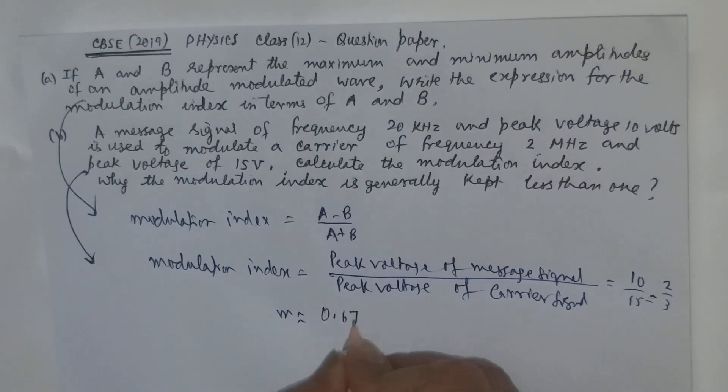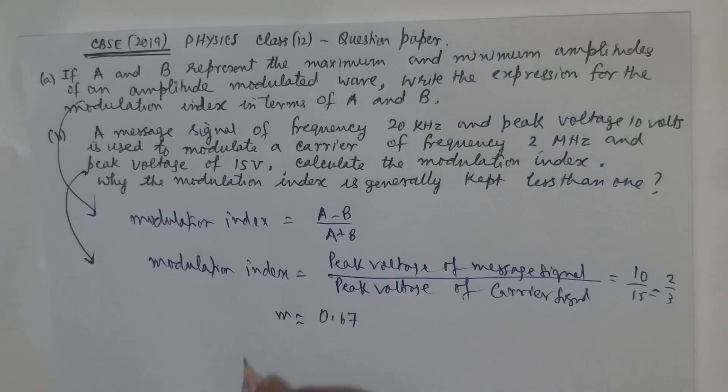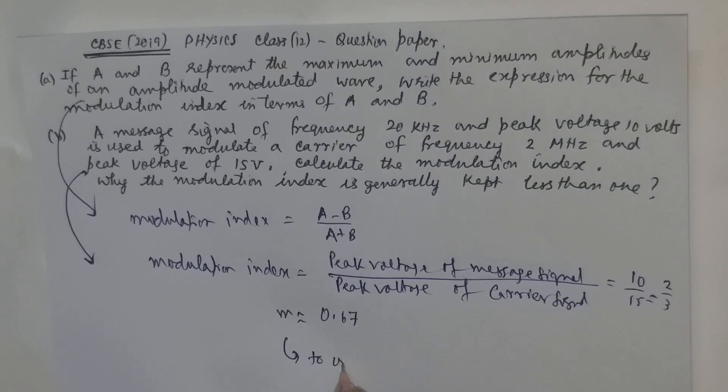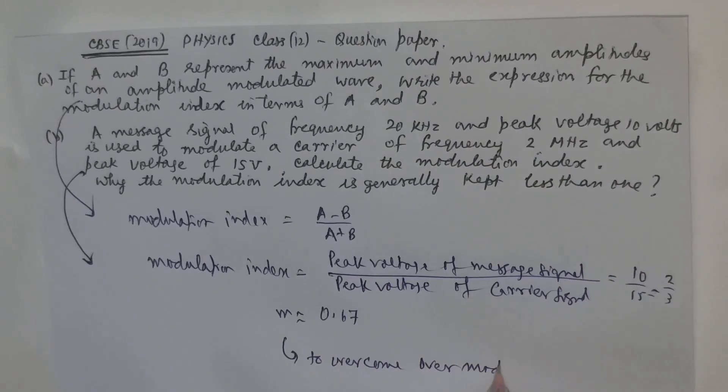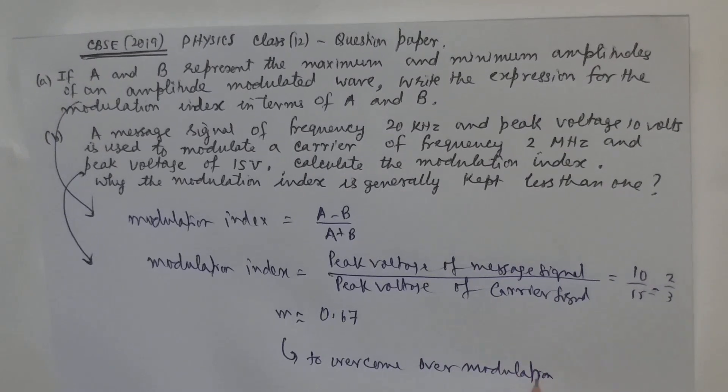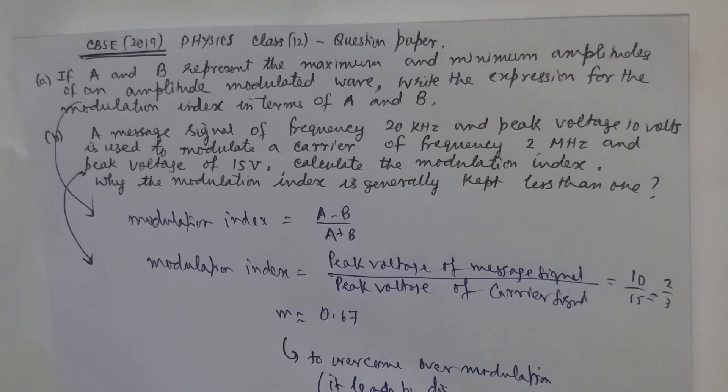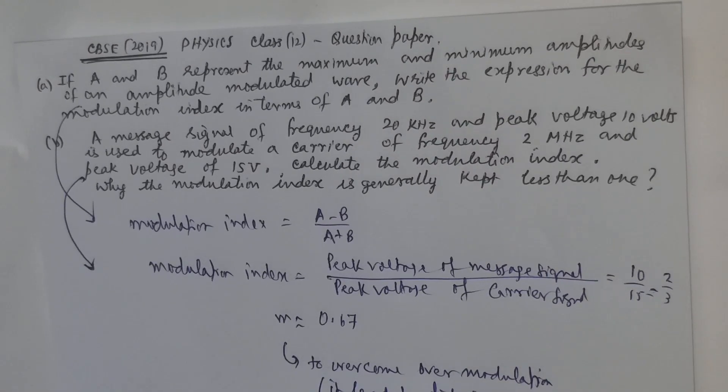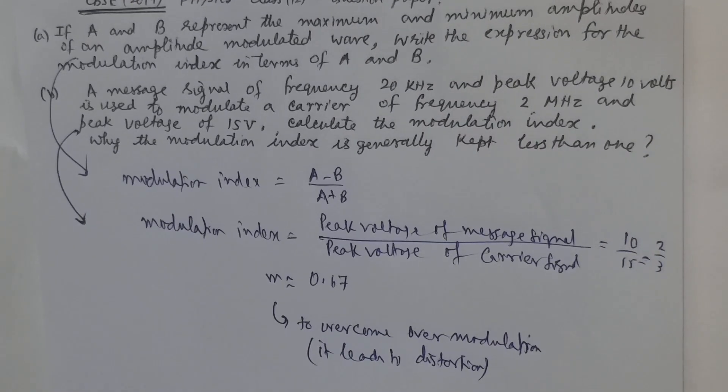This equals 10 by 15, which is 2 by 3 or approximately 0.67. Why is the modulation index generally kept less than 1? It is kept less than 1 to overcome over modulation because over modulation leads to distortion of the signal. So in order to avoid distortion it is kept less than 1.